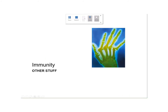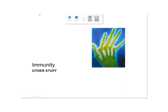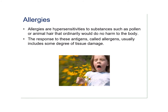Now we'll look at some diseases related to immunity. We're going to look at three types of abnormalities: what happens when you have an overreaction to something — allergies; what happens when you have the wrong type of reaction — autoimmune disorders; and what happens when you have an under-reaction or no reaction at all — immunodeficiency.